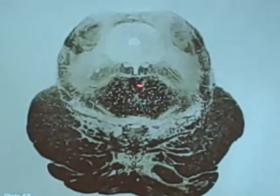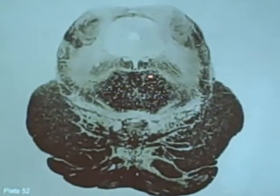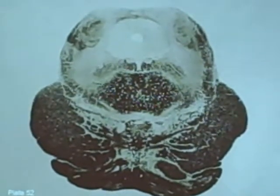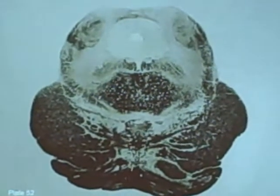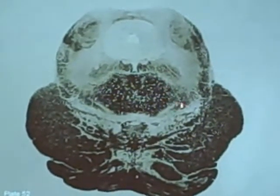Crossing of the decussation of the superior cerebellar peduncle. So this is why we say one cerebellum talks to the opposite hemisphere of the brain. Of course, one side of the brain talks to the opposite cerebellar hemisphere. We communicate back and forth. So the decussation of the superior cerebellar peduncle.